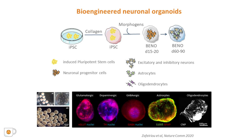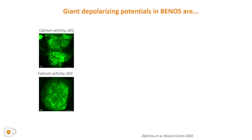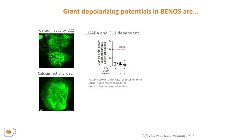For the sake of time, I will not go into the details of the protocol, but if you're interested, you can find all the information in a recent publication. By utilizing calcium imaging, we found that PINOs around day 20 developed giant depolarizing potentials, as you can see in the videos on the left. These giant waves of depolarization are known to train the developing neuronal networks in the embryonic and fetal human brain. Similar to the immature brain, GDPs in PINOs depend on both GABA and glutamate, since receptor blockade of one or both of these neurotransmitters decreased GDP frequency.